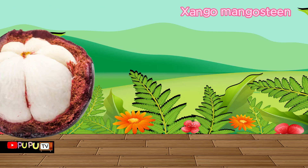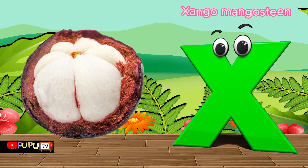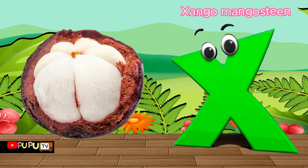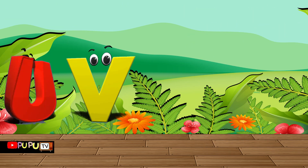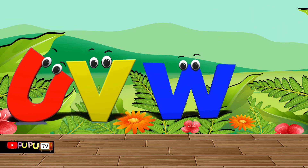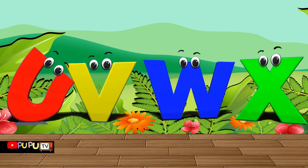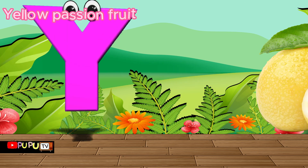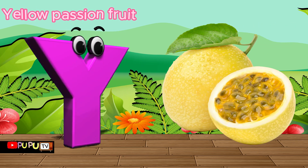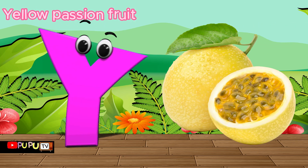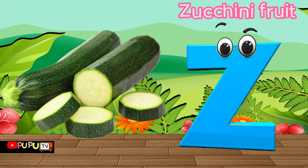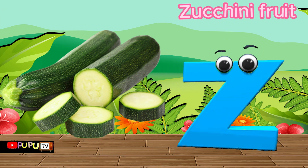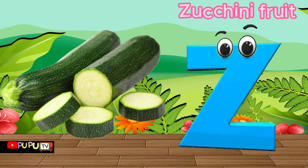X is for xango mangosteen, x-x, xango mangosteen. Y is for yellow passion fruit, yellow passion fruit. Z is for zucchini fruit, Z-Z, zucchini fruit.